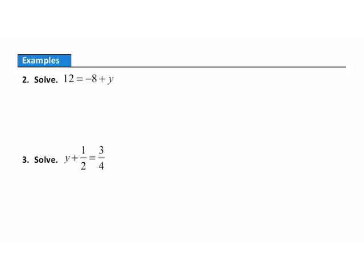Example 2. We're asked to solve this equation. What's keeping the variable y from being all alone is this negative 8. I want to undo that by adding 8. To keep the equation true, since I've added 8 to the right, I need to add 8 to the left. On the right, negative 8 plus 8 is 0, so y is isolated. On the left, 12 plus 8 is 20. So y equals 20.